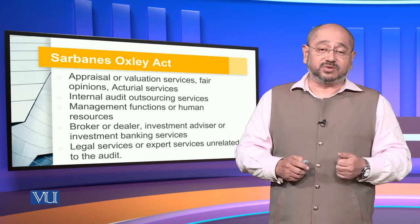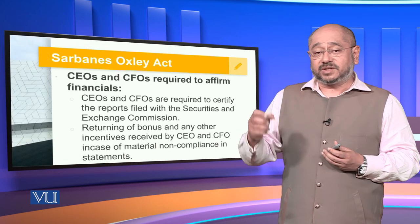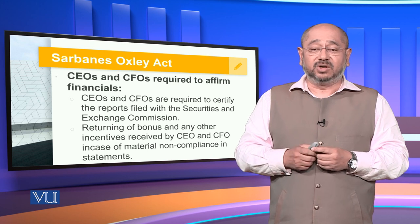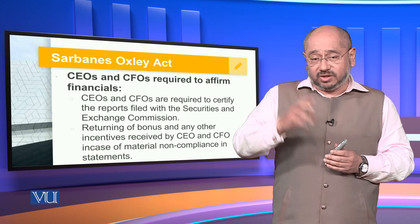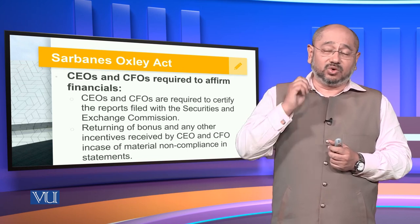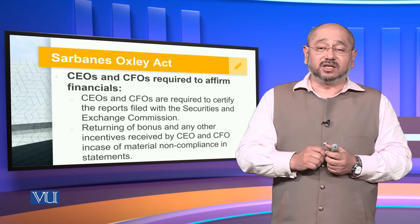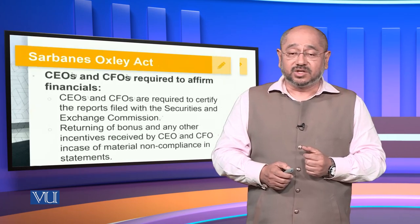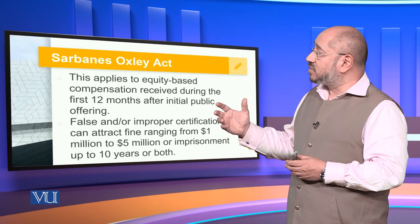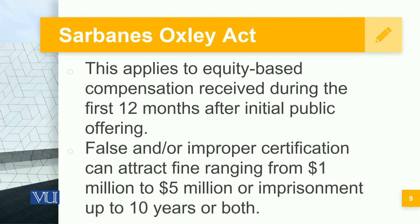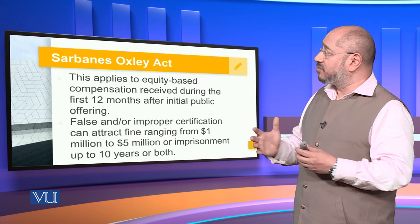The CEO and CFO are required to affirm the financials. CEOs and CFOs are required to certify the reports filed with the Securities and Exchange Commission. There is also the returning of bonuses and any other incentive received by the CEO and CFO in case of material non-compliance. The CEO and CFO must sign off, and it is their responsibility that everything in the report is above board, transparent, merit-oriented, and accountable — with nothing revolving around window dressing or concealment of facts. This applies to equity-based compensation received during the first 12 months after the initial public offering. False or improper certification can attract fines from $1,000,000 to $5,000,000 or imprisonment up to 10 years, or both.